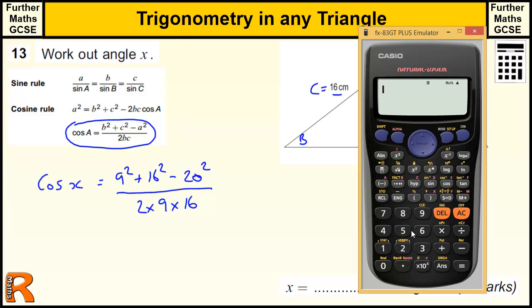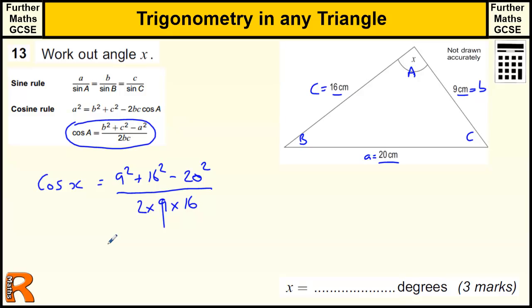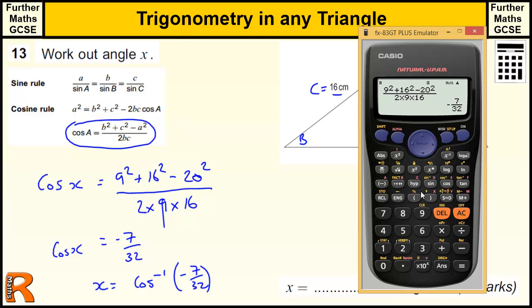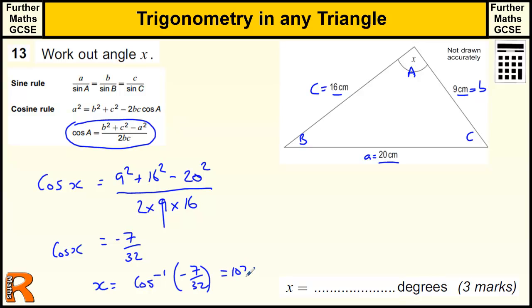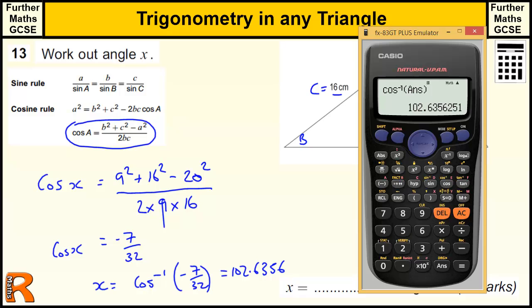So I need to work out this fraction. 9 squared plus 16 squared minus 20 squared, all over 2 times 9 times 16. That gives us a fraction of minus 7 over 32. So that's the cos of X equals that. So if I want to find X, I need to do cos to the minus 1 of minus 7 over 32. So shift cos to the minus 1 of the answer I just had gives me 102.635651.